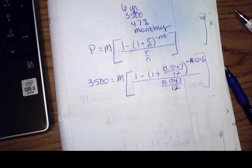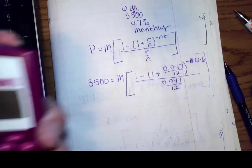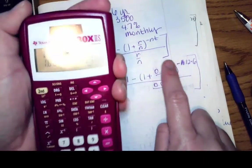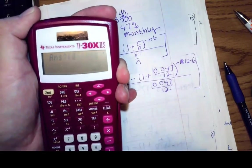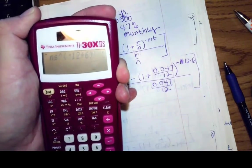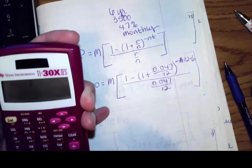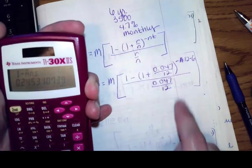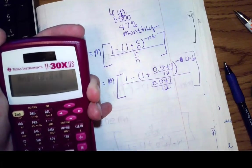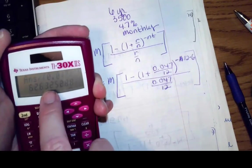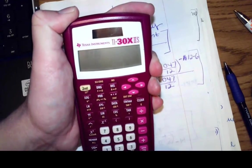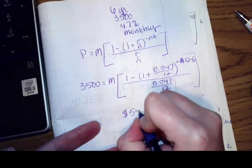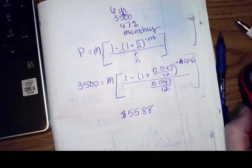So what have I got so far? What I have so far when I start entering this stuff is I'm going to do 1 minus 1 plus all that mess. So I've got 1 plus 0.047 divided by 12, raised to the negative 12 times 6. I'm going to do 1 minus that answer. So I get 0.2453 divided by 0.047 over 12. And now I get 62.63 something, so I need to divide 3,500 by that. So 3,500 divided by that answer is going to give me $55.88 per month. That's how much I'm going for.